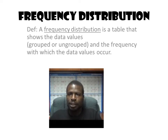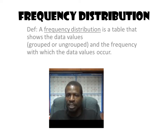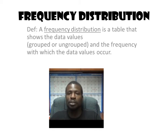Today we are going to discuss the frequency distribution, and in order to begin that discussion, we will define the frequency distribution. As you can see above, a frequency distribution is just a list or a table containing your data values, and along with those data values, you have their corresponding frequency of occurrence in the data set. So if you have a data value of 7 that occurs 5 times in your data set, you'd list the data value 7 and beside it list the frequency of 7's occurrence, which is 5.